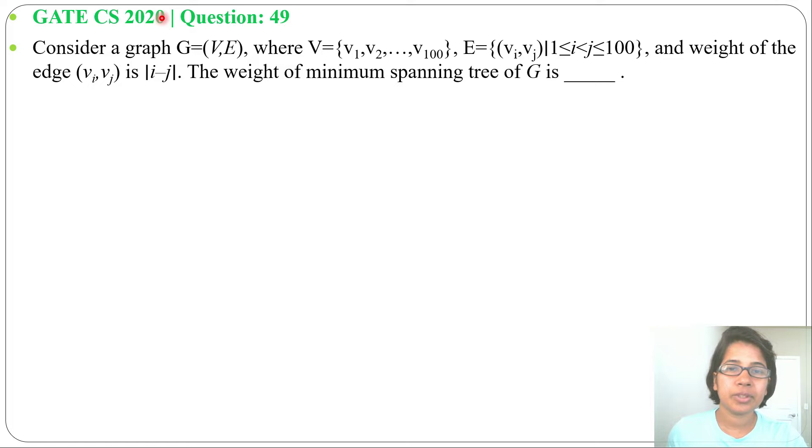Hi, let's have one previous question of greedy technique. This question was asked in GATE CS 2020, question number 49. Consider a graph G equals V, E, where V equals v1, v2, up to v100, and E equals...